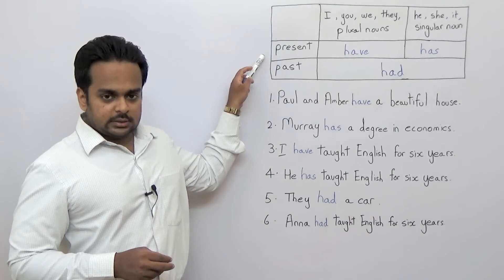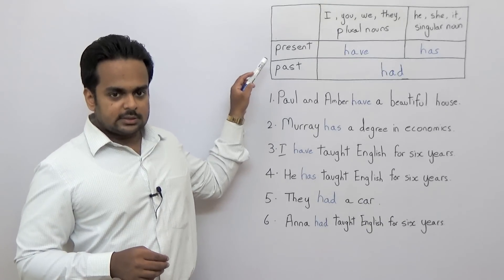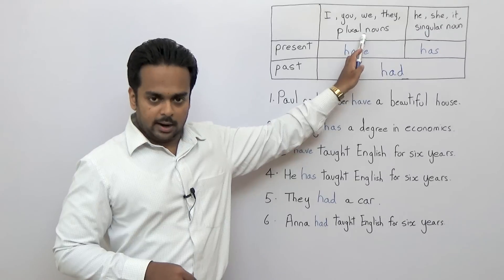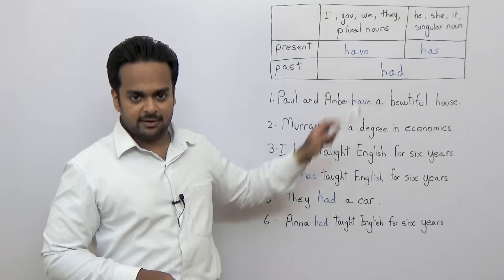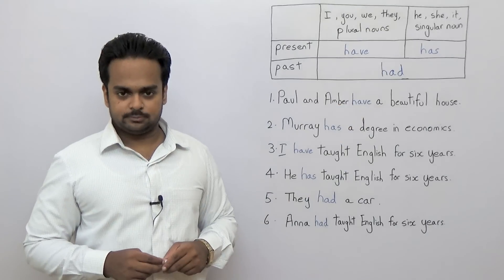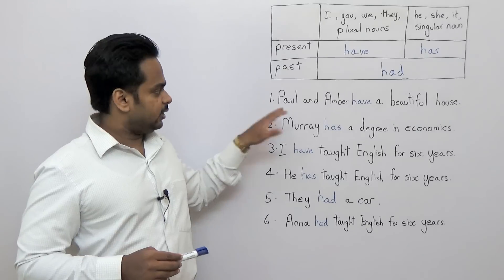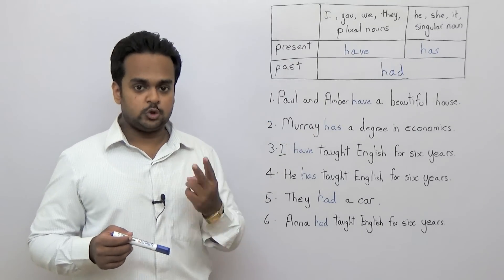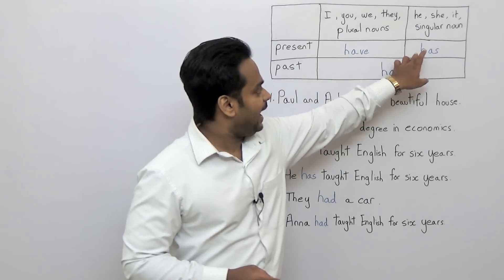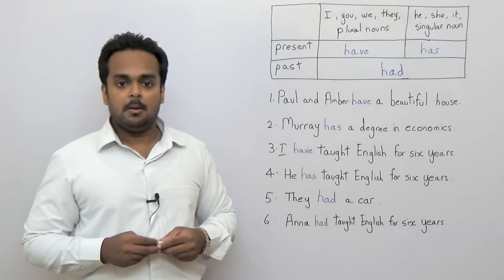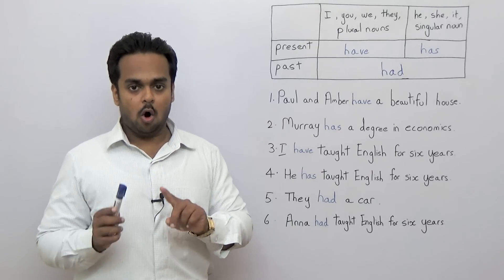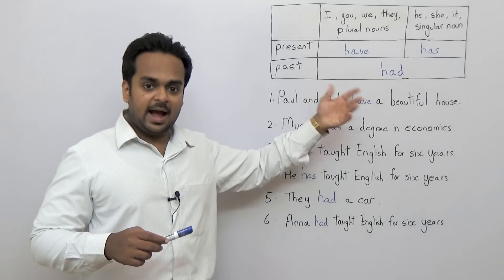Let's first look at the present tense. If you have a sentence in the present tense and the subject is I, you, we, they, or any plural noun, then you will use the base form — that is, 'have.' So in the sentence 'Paul and Amber have a beautiful house,' this is in the present tense and we have a plural because it's Paul and Amber, two people. So we use 'have.' Now if this was only Paul, we would use 'has' — 'Paul has a beautiful house' or 'Amber has a beautiful house.' But because it's two people, 'Paul and Amber have a beautiful house.'